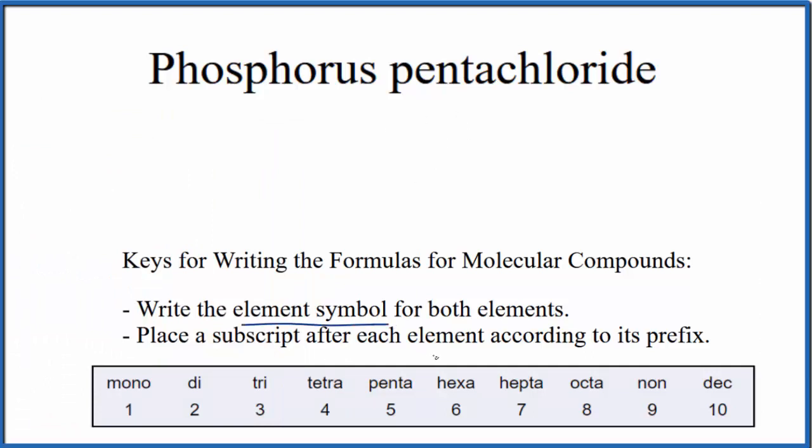First, we'll write the element symbol for both elements. For phosphorus, that's just P, and then for pentachloride, we write chlorine, Cl.